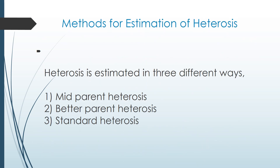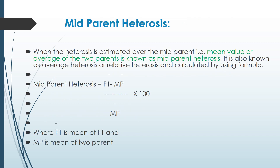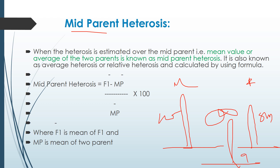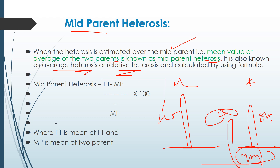There are three methods of estimating heterosis: mid-parent heterosis, better-parent heterosis, and standard heterosis. The first is mid-parent heterosis. The mid-parent is the midpoint between the two parents. For example, with parents of 10 meters and 8 meters, the offspring may be around 9 meters — in between. This is also known as average heterosis or relative heterosis, and is calculated by the formula: (F1 − midpoint) ÷ midpoint × 100.